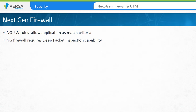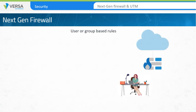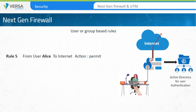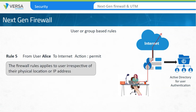Another feature of a next-generation firewall is illustrated in Rule 5. The rule permits user Alice to access the internet. However, the rule does not include the IP address of Alice's workstation. This can be enabled by configuring the firewall to authenticate the user through Microsoft Active Directory. In this way, even if Alice connects to the network through Wi-Fi, a different workstation, or through a different office, the security rules can be applied to her even if her IP address changes.